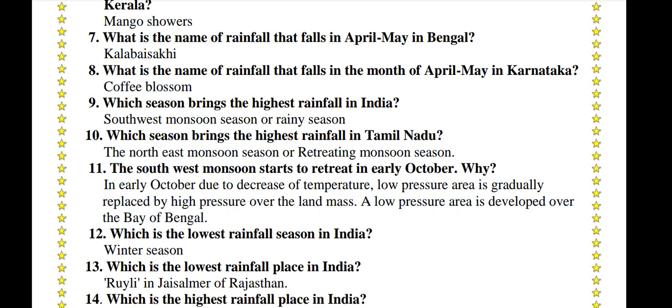The Southwest monsoon starts to retreat in early October. Due to decrease of temperature, the low pressure area is gradually replaced by high pressure over the landmass. A low pressure area is developed over the Bay of Bengal. Which is the lowest rainfall season in India? Winter season.